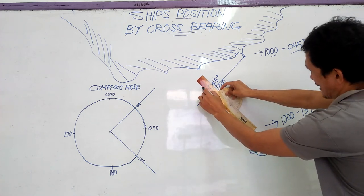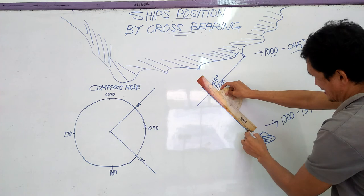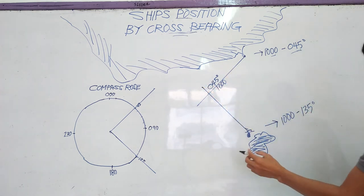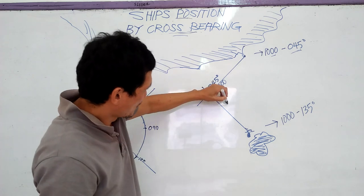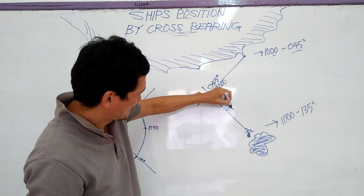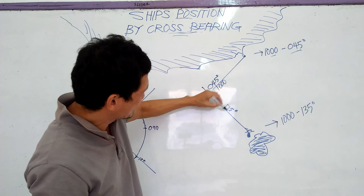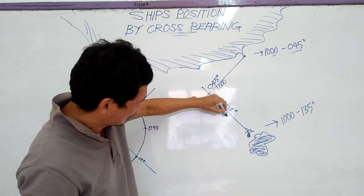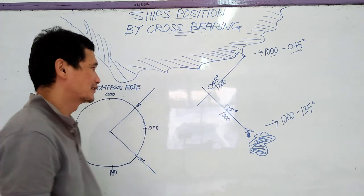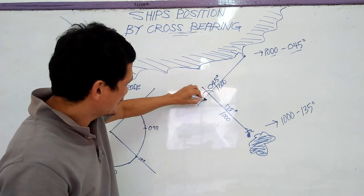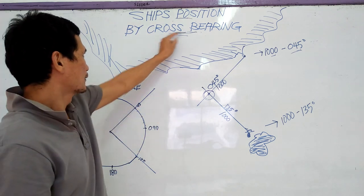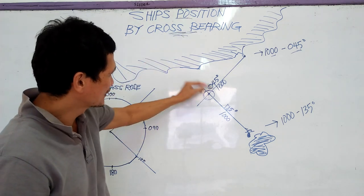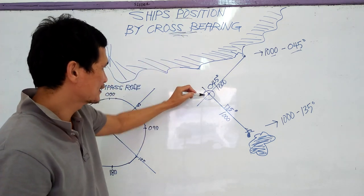And meet a line. So this is 135 degrees at 1000 hours. Therefore your ship is here. Your ship is here, the cross bearing. This is cross. This is your ship.